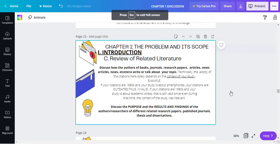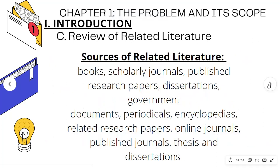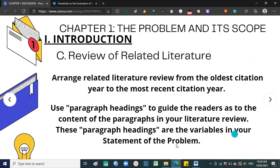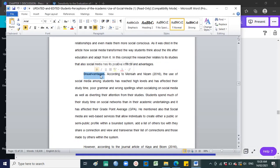When writing the Review of Related Literature, arrange literature from the oldest citation year to the most recent. Use paragraph headings — these headings are the variables in your Statement of the Problem. For example, if your SOP has two questions about advantages and disadvantages of social media academic use, then 'Advantages' and 'Disadvantages' become your paragraph headings.